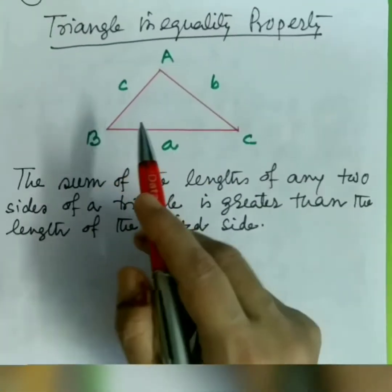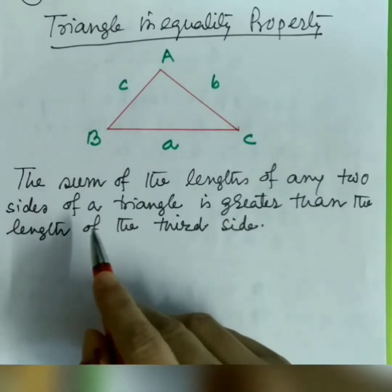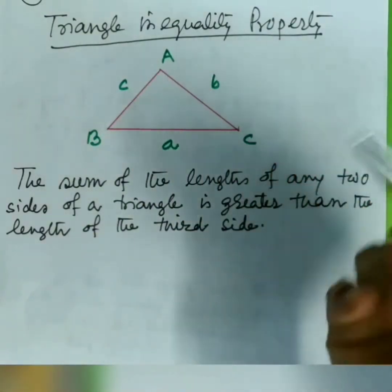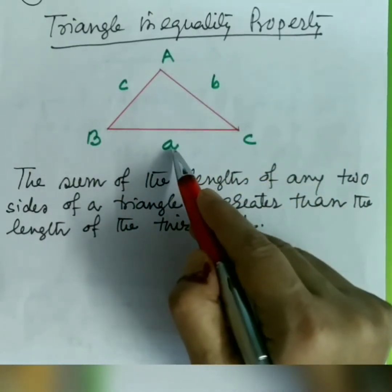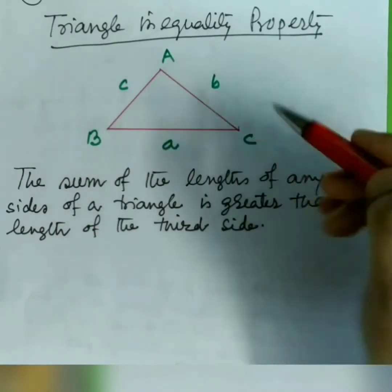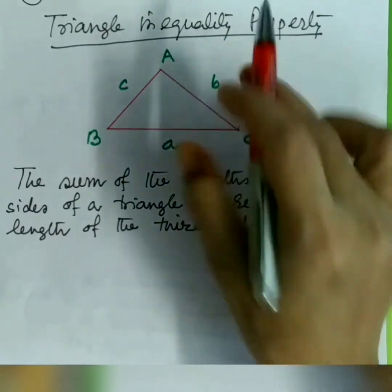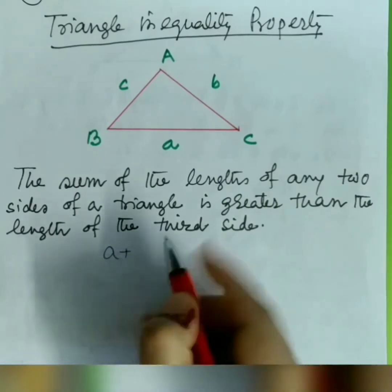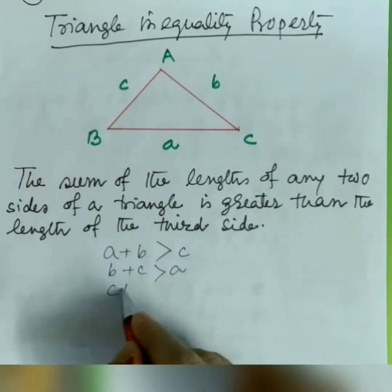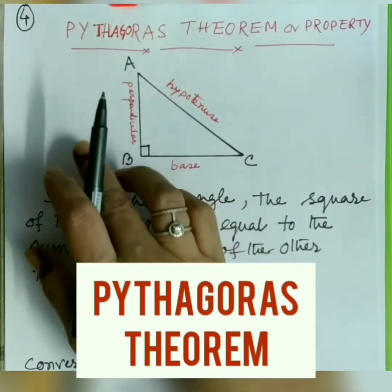Property number 3: triangle inequality property. It states the sum of the lengths of any two sides of a triangle is greater than the length of the third side. Consider triangle ABC where the sides opposite to vertices A, B, and C have measures a, b, and c respectively. Then: a plus b is greater than c; b plus c is greater than a; and c plus a is greater than b.